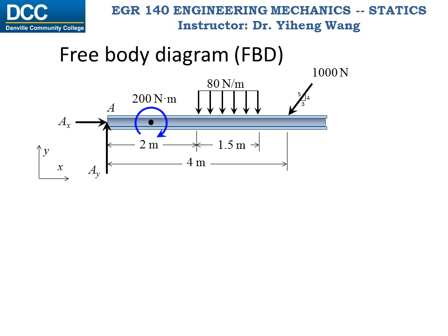Finally, the forces and the 200 Nm couple moment all cause the member to rotate clockwise. Therefore, the wall must also exert a counterclockwise moment support to prevent this rotational motion. Since this is a 2D problem, all motions can only occur within the x-y plane. Therefore, there cannot be any other type of motion, and the wall will not provide any other type of support reactions.